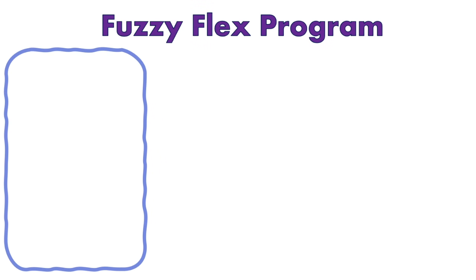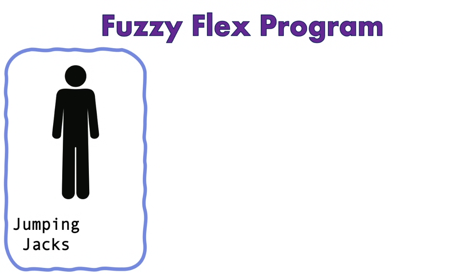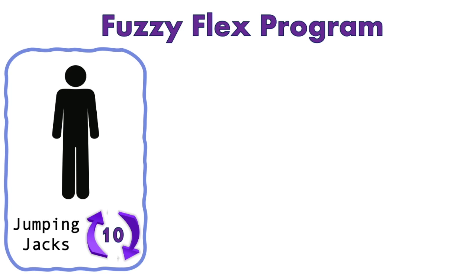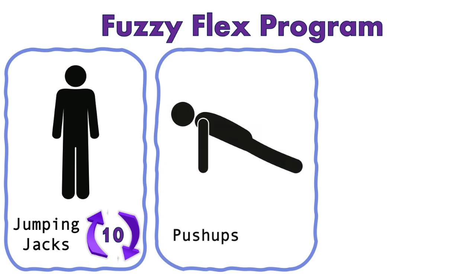The first move is jumping jacks. One jumping jack looks like this. Our program says to loop this action ten times. Let's loop this action.